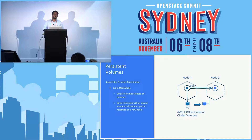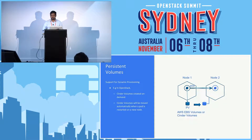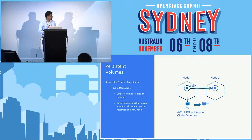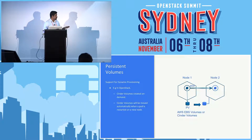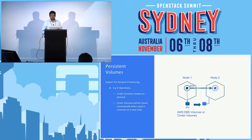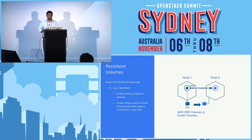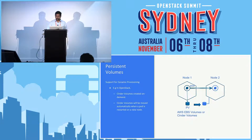Similarly, if you have stateful applications as part of your deployment, they can basically request persistent storage. In the case of OpenStack, that would be Cinder volumes, and in AWS it could be EBS volumes. These volumes are actually dynamically created, so the cluster admin does not need to pre-create these persistent volumes in the cluster.